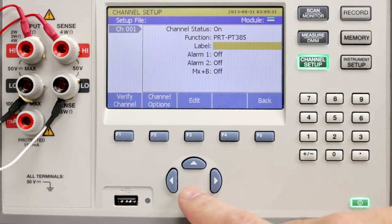You have the ability to set two alarms on each channel. These alarms indicate when either an upper or lower range has been exceeded. The alarms can output a signal from the rear panel output to an external device.